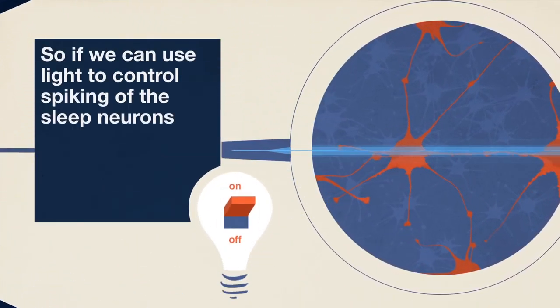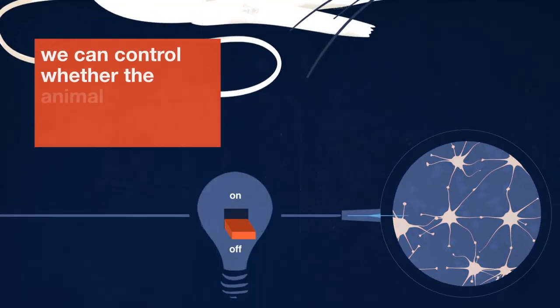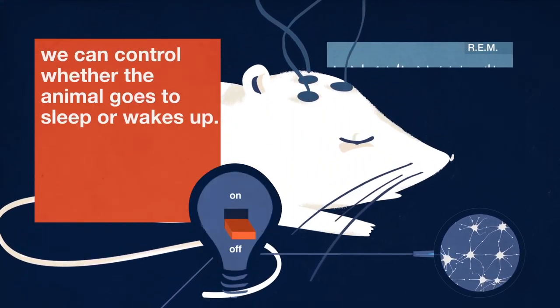So if we can use light to control spiking of the sleep neurons, we can control whether the animal goes into sleep or wakes up.